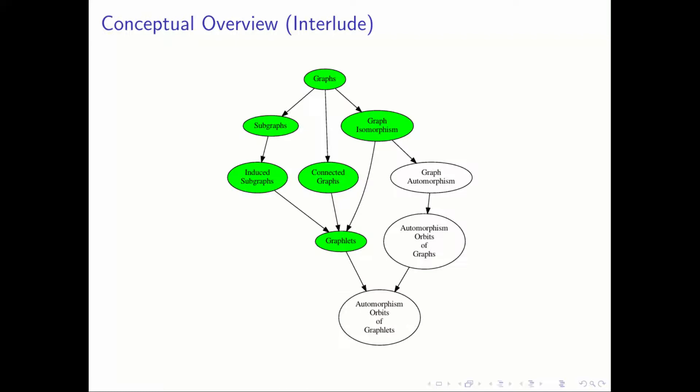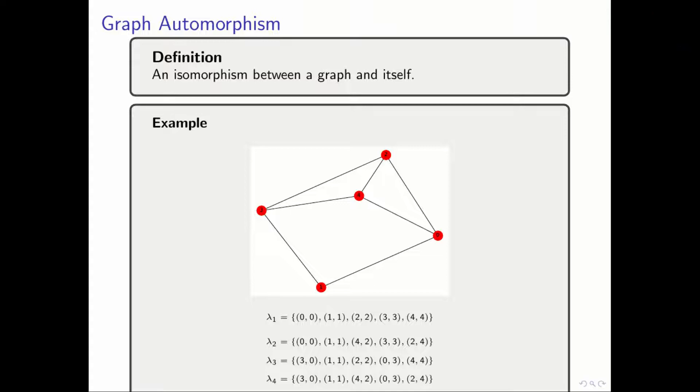We have now gone from the concept of graphs to graphlets, and here we turn back to graph automorphism in order to understand automorphism orbits of graphlets. A graph automorphism is an isomorphism between a graph and itself. In this example, we see that the automorphisms are not unique, and that specific pairs of nodes can be swapped for others while preserving the structure.